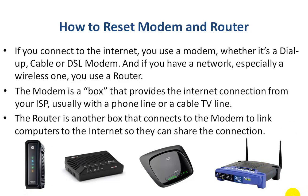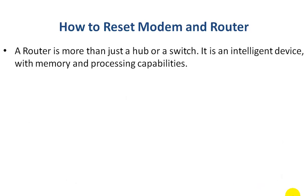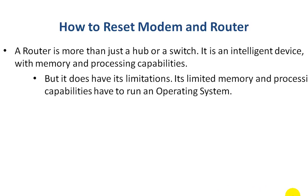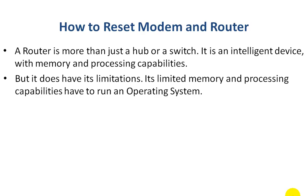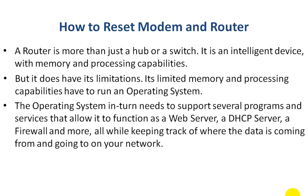The modem is a box that provides the internet connection from your ISP — your internet service provider — who you pay your bill to, usually connected with a phone line or cable TV line. The router is another box that connects to the modem to link computers to the internet so they can share a single connection. A router is more than just a hub or switch — it's an intelligent device with memory and processing capabilities, but it does have its limitations. Its limited memory and processing have to run an operating system that in turn supports several programs and services, including a web server, a DHCP server which gives you your private IP addresses, a firewall, and more — all while keeping track of where data is coming from and going to on your network.